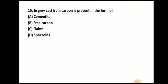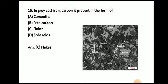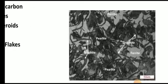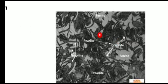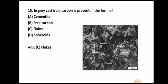Next question: In grey cast iron, carbon is present in the form of? The answer is flakes. Here you can see the flakes. So carbon is present in the form of flakes in grey cast iron.